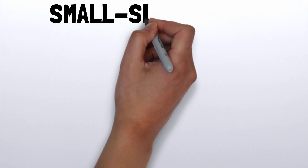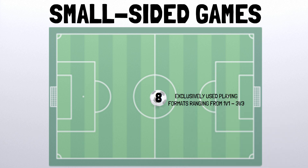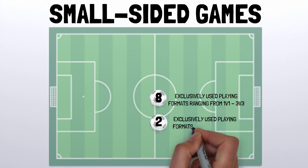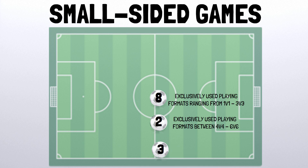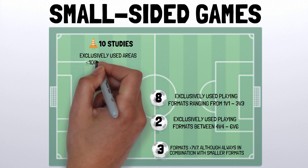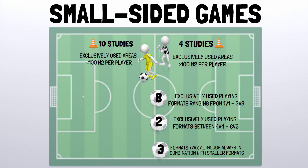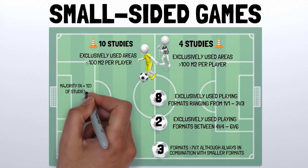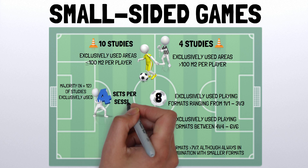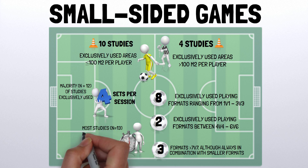For the studies using small-sided games, 8 studies exclusively used playing formats ranging from 1v1 to 3v3, while 2 studies exclusively used formats between 4v4 and 6v6. Three studies employed combinations of formats that included formats larger than 7v7, always in combination with smaller formats. In terms of relative area of play, 10 studies used areas equal to or below 100 m² per player, while 4 studies used areas above 100 m² per player. Most studies using small-sided games involved 4 or fewer sets per session, with work duration per set ranging between 45 seconds and 8 minutes, though most used 4 minutes or less per set.